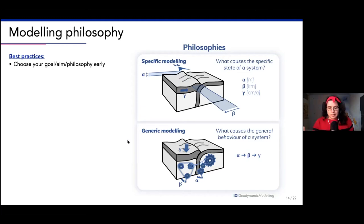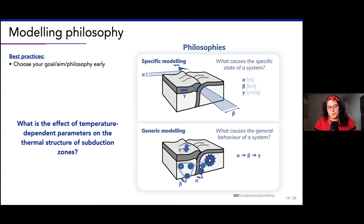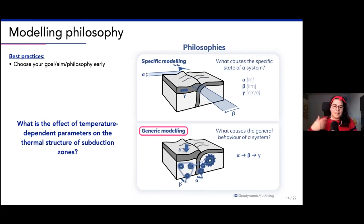The other philosophy is generic modeling - more of a generic thing where you're interested in what causes the general behavior of the system. If you have a subduction zone and different plate velocities, for example, what changes? You're not necessarily interested in a specific subduction zone, but more in the general behavior of the system. Our research question - what is the effect of temperature-dependent parameters on the thermal structure of subduction zones - is quite a generic modeling research question, so we are going to do generic modeling.